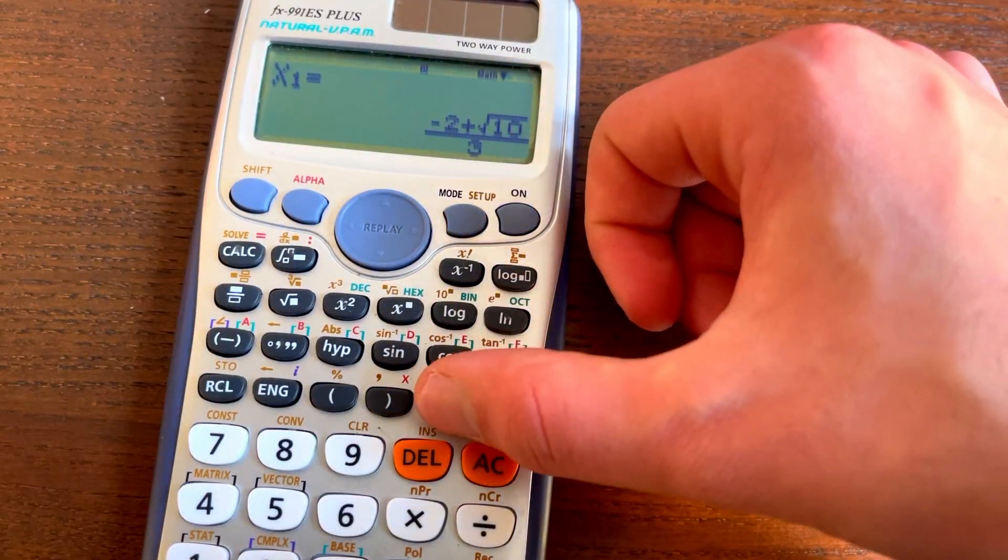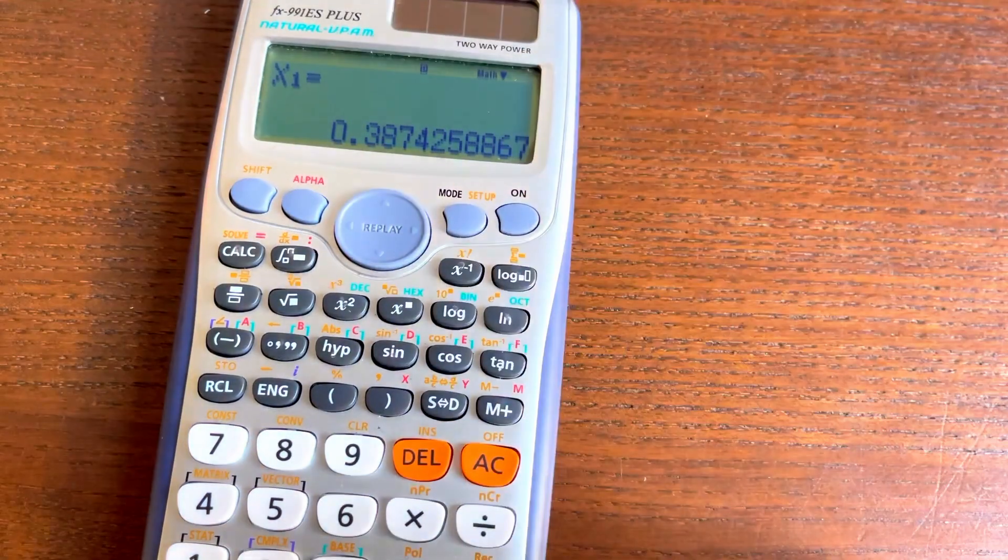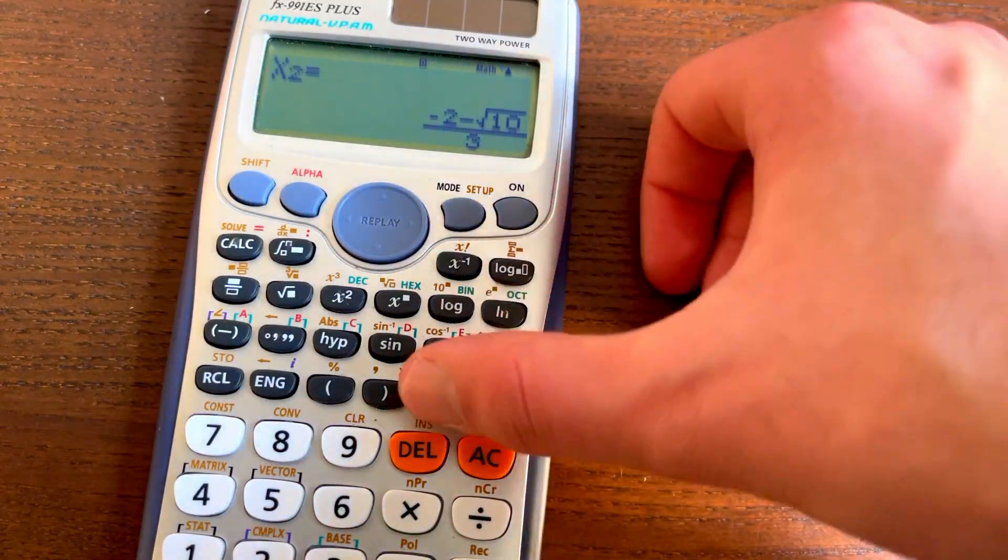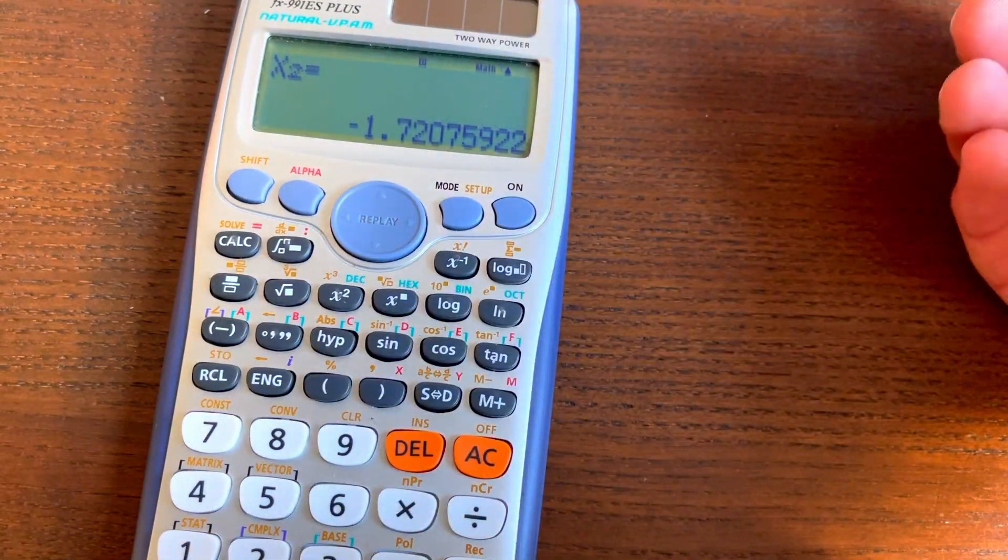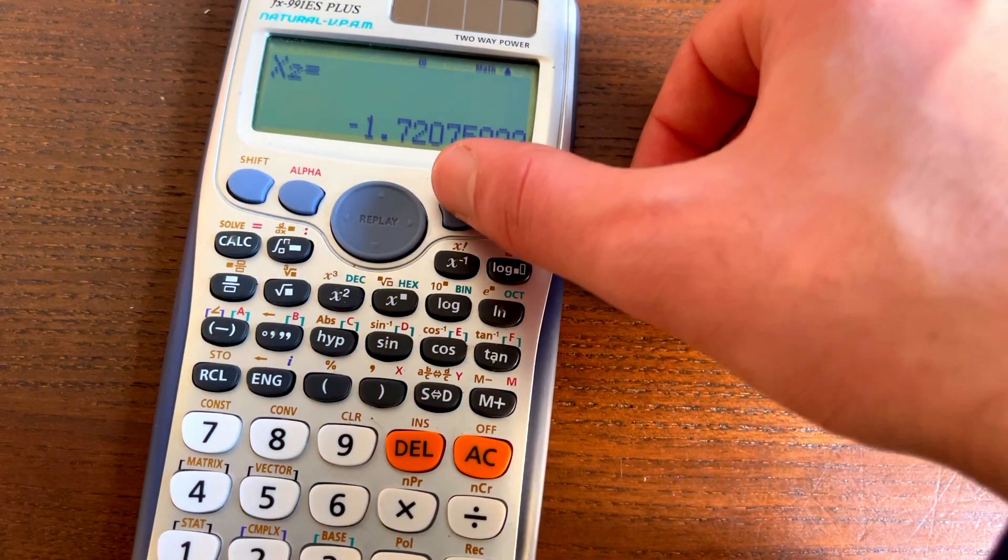We then get given our first one, which is that, we can actually use S to D to get the decimal, and then we click equals again, and we get our second one. Just like that, in seconds.